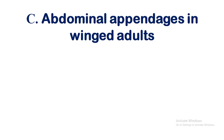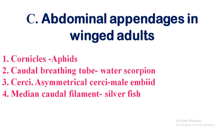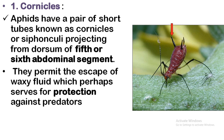Abdominal appendages in winged adults include: cornicles in aphids, caudal breathing tube in water scorpions, cerci, asymmetrical cerci in male embiids, and the median caudal filament in silverfish. The cornicles — aphids have a pair of short tubes called cornicles or siphunculi from the fifth or sixth abdominal segment. These are used for protection against predators by releasing a waxy fluid.